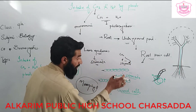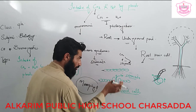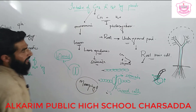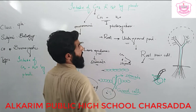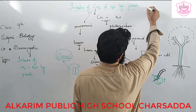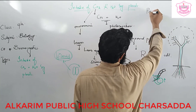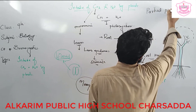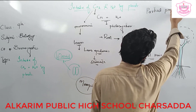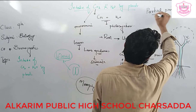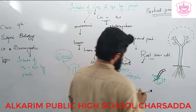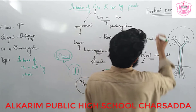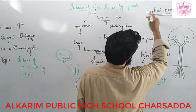How does CO2 diffuse from the environment toward the leaves? It depends on the partial pressure of CO2. Simply, the pressure of one gas in a mixture of gases is known as partial pressure.